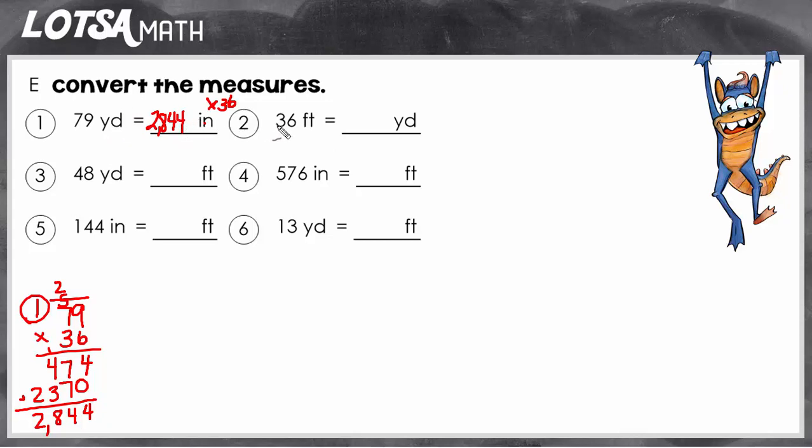So let's try another one. On number two we have 36 feet to yard. So we have smaller to bigger or fly to horse divide, of course. So what are we going to divide by? Well, we're going to divide by the number of feet in a yard.